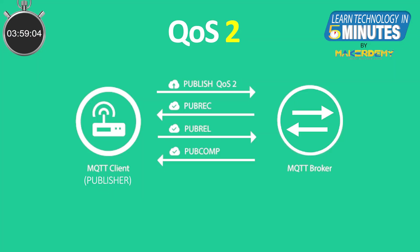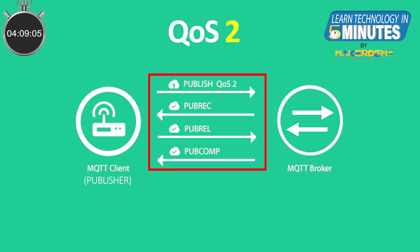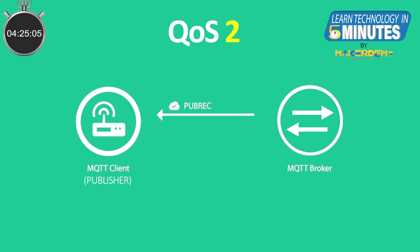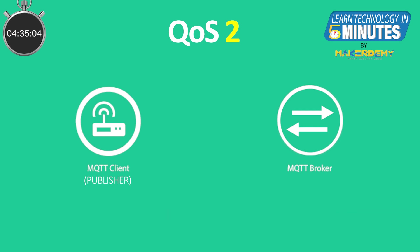Quality of service level 2: QoS 2 guarantees that each message is received and only once received by the intended client. The guarantee is achieved by a four-part handshake between the client and the broker, making it the slowest method to send a message. The publisher sends the message to the broker and waits for an acknowledgement. When the publisher receives the acknowledgement, it sends another acknowledgement back to the broker. The broker then forwards the published message to its subscribers and sends a publish complete message to the publisher. When the publisher receives this, the process is complete and it can delete the message from its outbound queue.